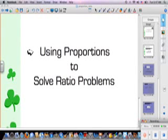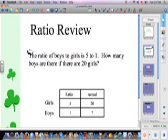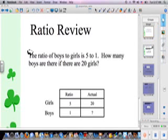All right, today we're going to use proportions to solve ratio problems, and this one is going to be easy because it's all review. So remember for ratio review, we were given word problems. Here's an example: the ratio of boys to girls is 5 to 1. How many boys are there if there are 20 girls?